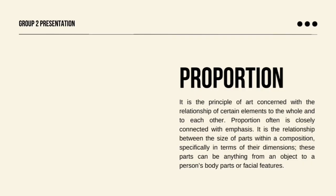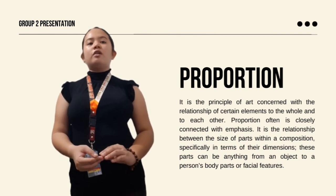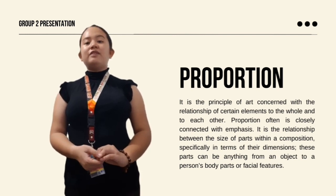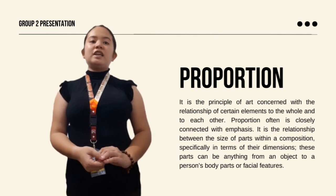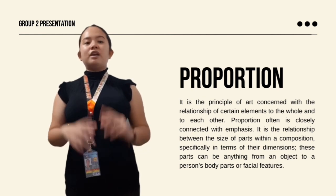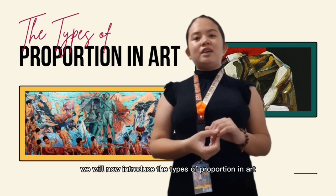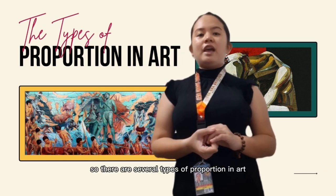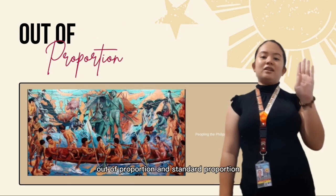Now let's proceed to proportion. Proportion is the principle of art concerned with the relationships of certain elements to the whole and to each other. It is closely connected with emphasis and refers to the relationship between the size of parts within a composition in terms of their dimensions. These parts can be anything from an object to a person's body parts or facial features. There are several types of proportion in art: altered, hierarchical, out of proportion, and standard proportion.